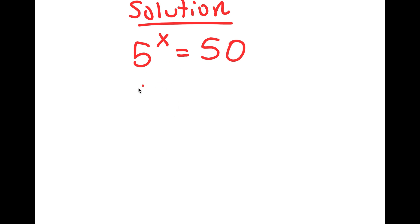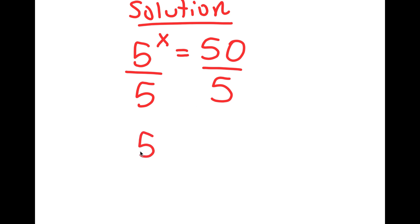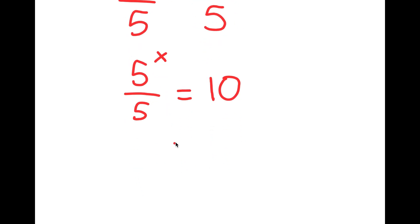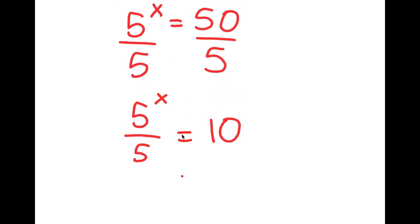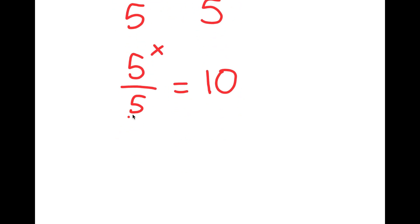And I'm going to start by dividing both sides by 5. So now I get 5 to the power of x over 5 is equal to 10. And 5 here, this is the same thing as 5 to the power of 1.